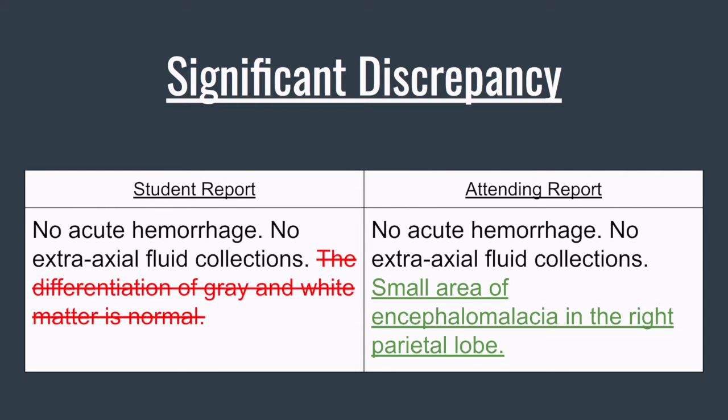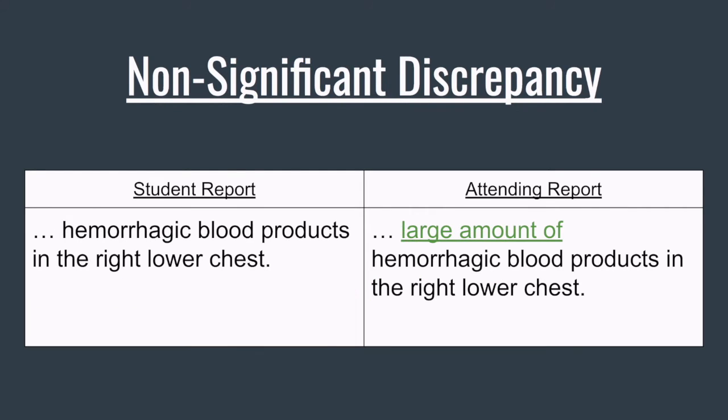Seeing that the ultimate purpose of solving this problem was to provide better feedback to medical students, it would be helpful to visualize the relevant differences between the report pairs. The current method is called a diff tool, which merely finds raw text differences between documents. As you can see, it treats insignificant and significant discrepancies between the reports in the same way, which is not ideal for providing feedback.